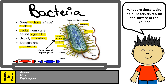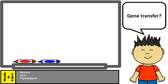Some bacteria may have outer structures that help it propel, such as the flagella. They also have pili, which help the bacteria adhere to surfaces such as food, liquids, or even other bacteria when they're trying to transfer genes.